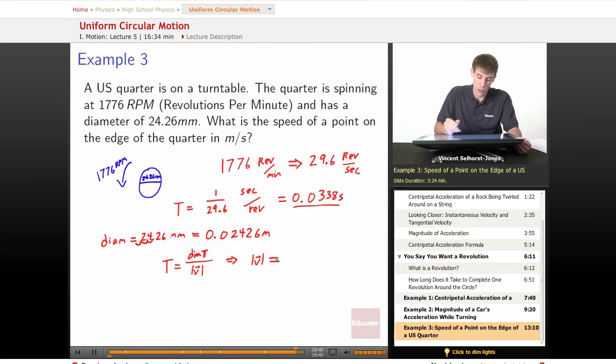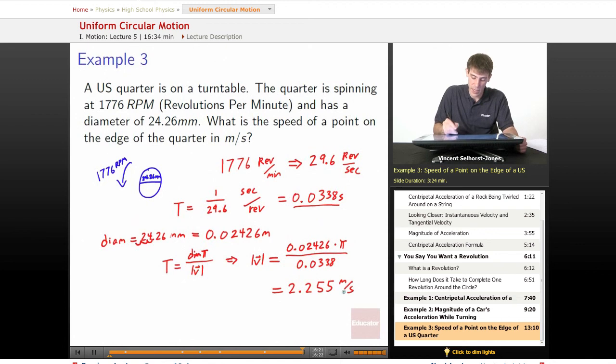Your speed is equal to your diameter, 0.02426 meters times pi. Once again, I'm omitting units just for speed and ease, but I encourage you to keep them. Divided by your speed, which is, oh, divided by the time it takes. Sorry, that's T we're looking at down here. So, divided by 0.0338, which, when we solve it using a calculator, we get 2.255 meters per second, is the speed that a point on the edge is moving at.